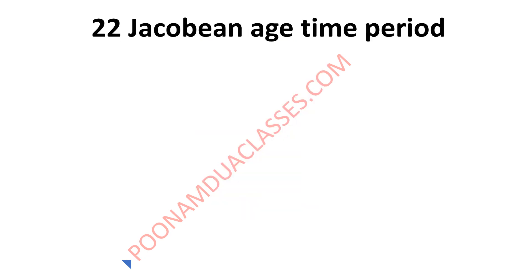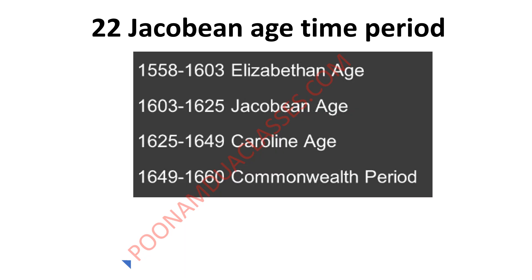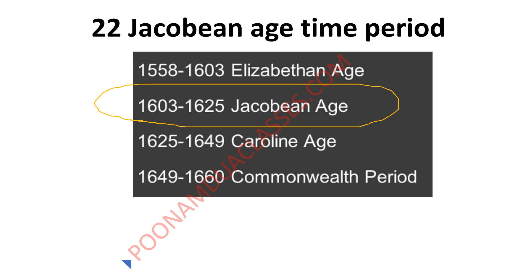The next question was about the Jacobean Age time period — this was not a tough question. The correct answer is 1603 to 1625. It was a period of English and Scottish history that coincides with the reign of James VI, who also inherited the crown of England as James I in 1603. This era succeeds the Elizabethan and precedes the Caroline era.